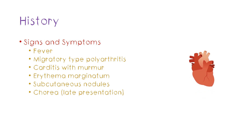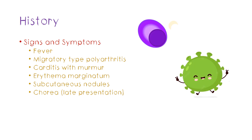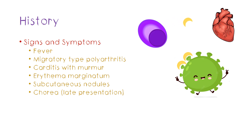The third feature is a murmur. The pathophysiology of carditis in rheumatic fever is really important. Our body produces antibodies against antigens on the bacteria. Some antigens on the bacteria are similar to antigens found in our own body — this is called molecular mimicry. So the antibodies produced can sometimes attack harmless antigens in our bodies, producing inflammation in areas like the joints or heart valves. It is therefore important to note that the damage done is not from a direct effect of the bacteria itself.